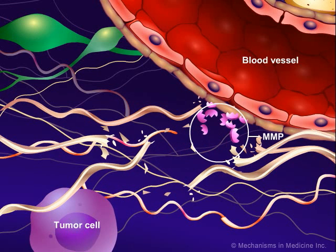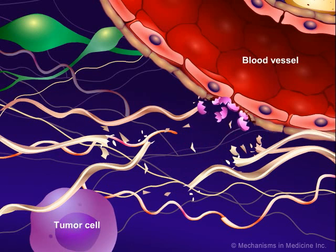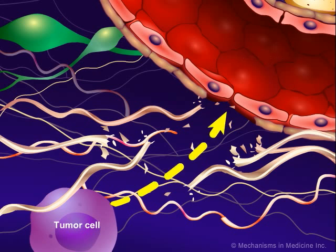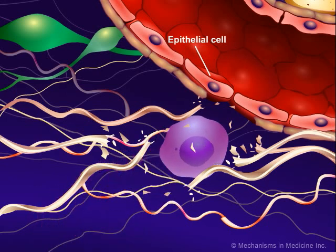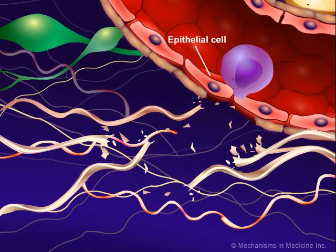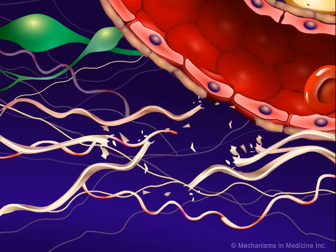When the MMPs reach the vessel, they break down the basement membrane surrounding the vessel through enzymatic action, opening access to the epithelial cells lining the vessel. Tumor cells can then migrate into the blood and lymph by entering through the tight junctions of the epithelial cells. The tumor cells are then transported through the blood and lymph to other tissues.